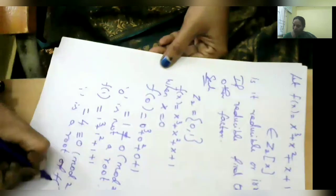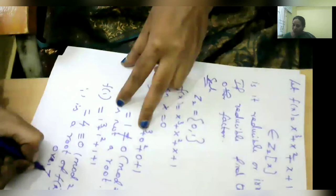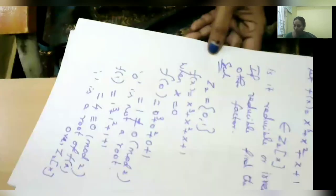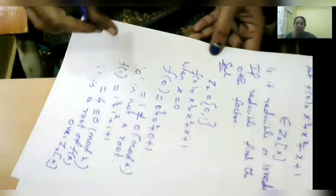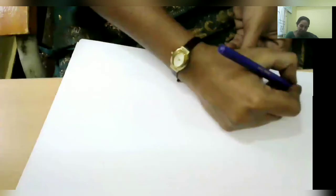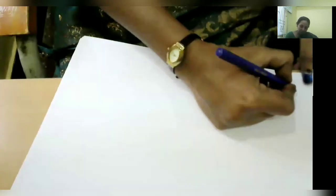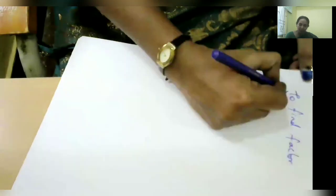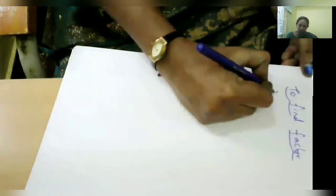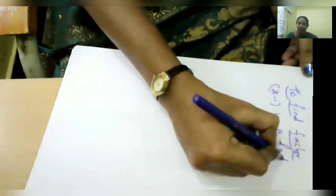1 is a root of f(x) over Z₂[x]. Since 1 is a root, we can write the given polynomial as a product of factors. So x − 1 is a factor because 1 is a root. Therefore x − 1 is a factor, and we are going to calculate the remaining factor by writing f(x) = g(x)·h(x), where g(x) = x − 1.